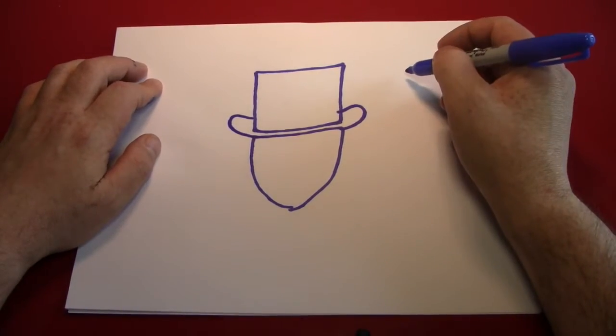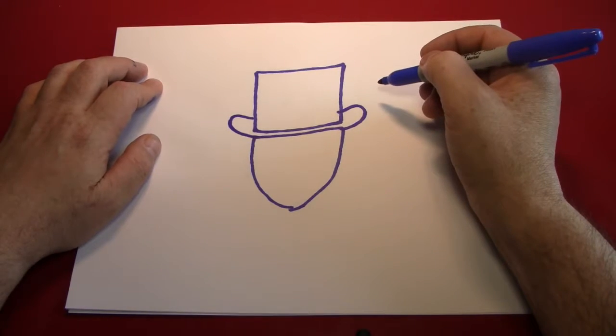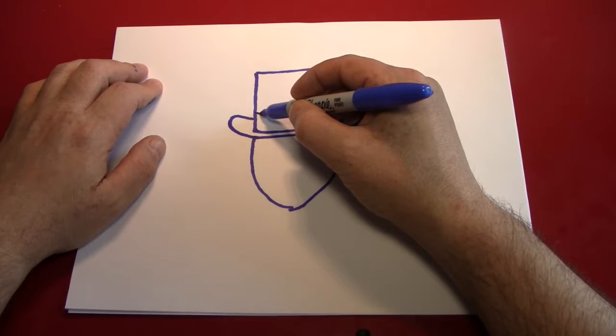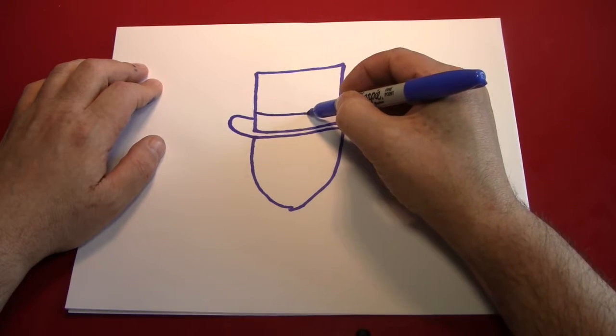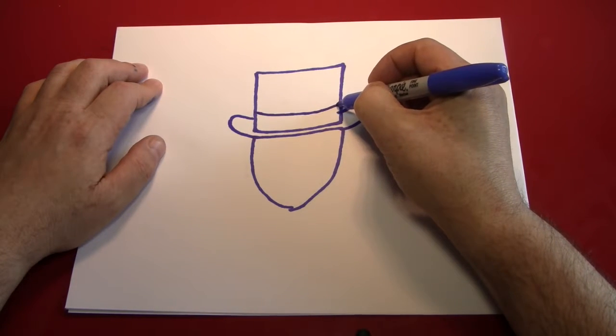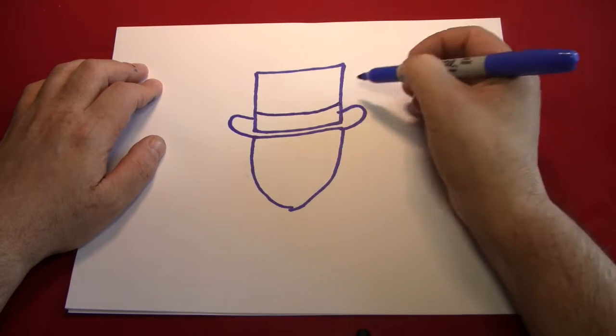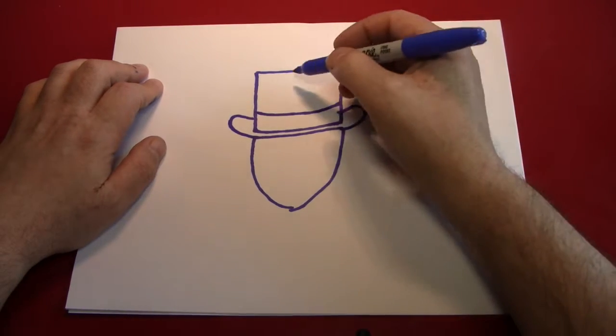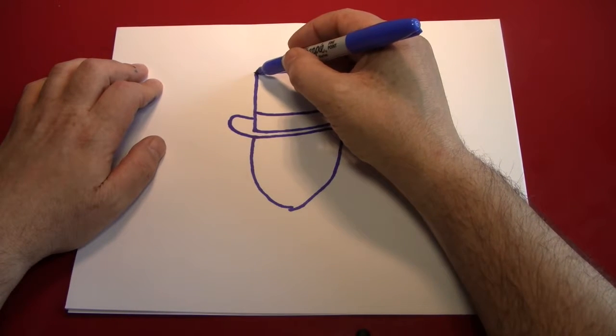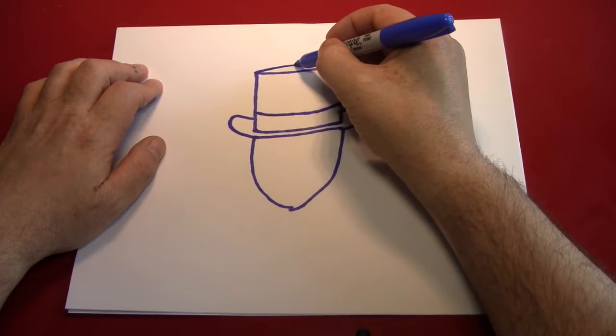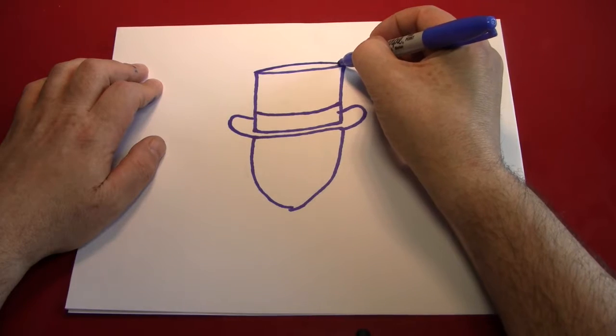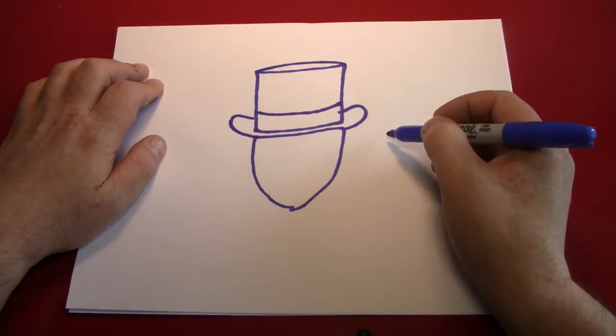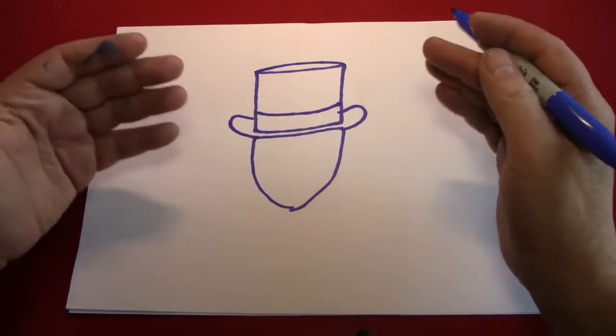Every good hat has a hat band, so why not give this one a hat band. And a hat band is a band that goes around the hat. There you go. That wasn't so hard. Make the top of the hat by creating a line that goes the other way from this line. And we're moving right along.